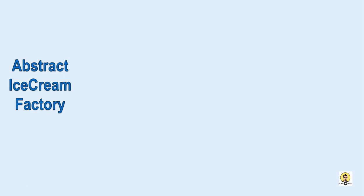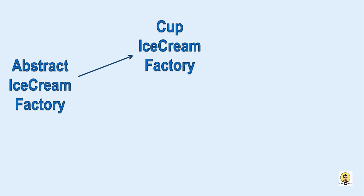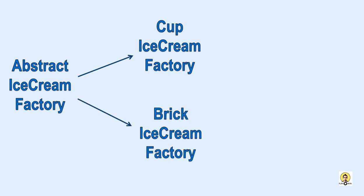We are going to understand an example of ice cream. Suppose you want different kinds of ice creams — that may be a cup type ice cream or maybe a brick type ice cream. You went to the abstract factory and through the abstract factory, you went to the exact factory, whether it's a cup type factory or a brick type factory.